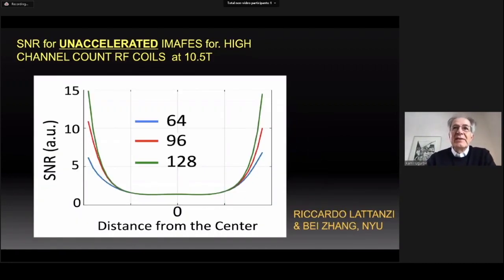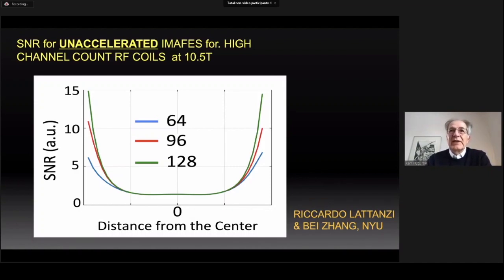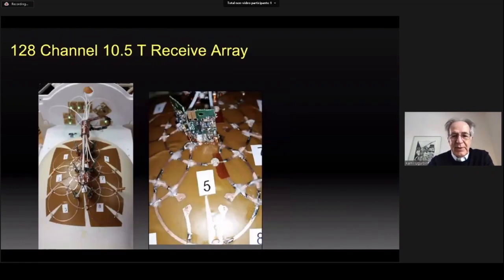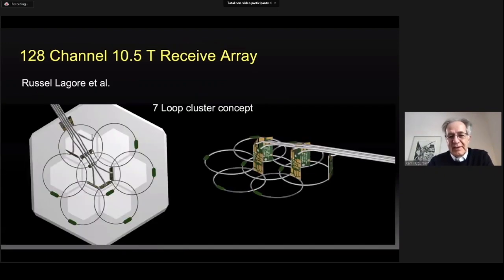We expect even higher gains with 128 channels. For unaccelerated imaging, the gains will be mainly peripheral as shown in simulations here, but for accelerated imaging — which is the real acquisition condition — the gains will be over the whole brain. Therefore, having completed the 64-channel coil, we are now working on 128-channel coil development. Here are some progress reports: a section of the coil cluster with our homemade on-coil preamplifiers, and a schematic drawing showing the amplifiers and coils together. Such clusters will be tiled to achieve the 128-channel coil.